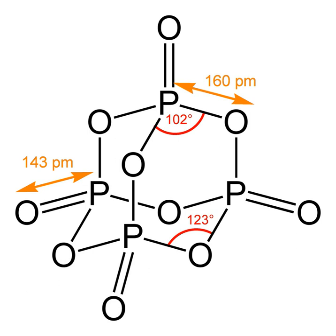The desiccating power of P4O10 is strong enough to convert many mineral acids to their anhydrides. Examples: HNO3 is converted to N2O5, H2SO4 is converted to SO3, hydrogen hypochlorite is converted to dichlorine heptoxide, CF3SO3H is converted to (CF3SO2)2O.